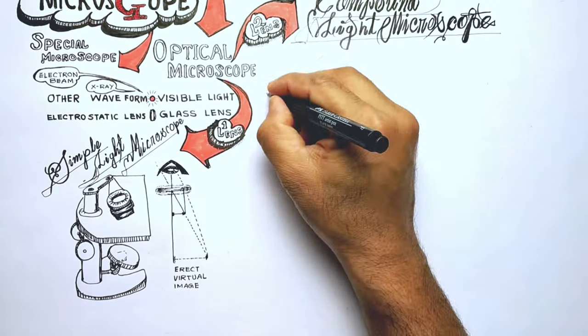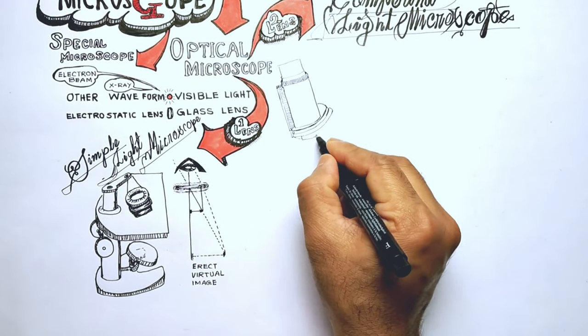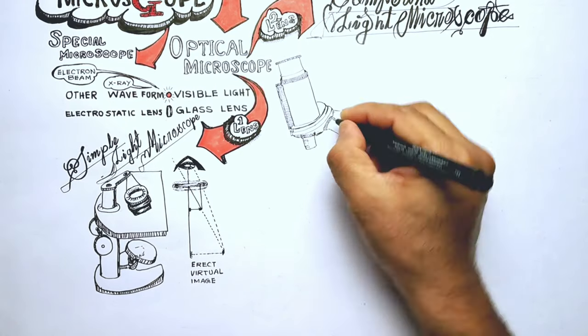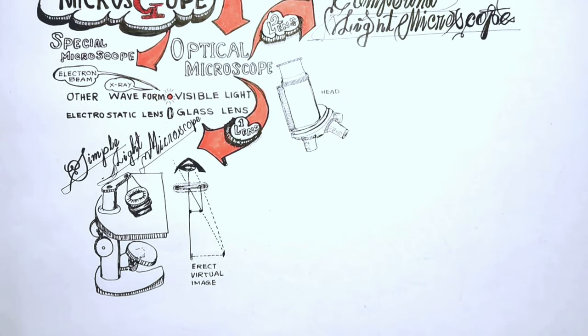Today, simple microscopes are not used often because the introduction of a second lens led to the more powerful compound optical light microscope. With two lenses, the compound microscope offers better magnification than a simple microscope.